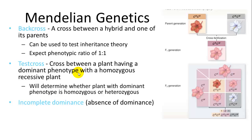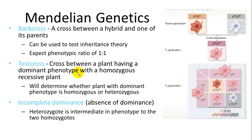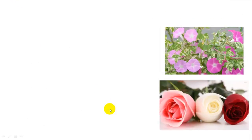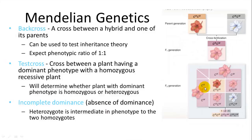Incomplete dominance is another pattern where one gene doesn't fully mask the other — instead they make a blend, sometimes called blended inheritance. A heterozygote is intermediate in phenotype between the two homozygotes. This occurs sometimes in flower types, where crossing a red and a white homozygote gives pink offspring — they have some of the red pigment but not all.